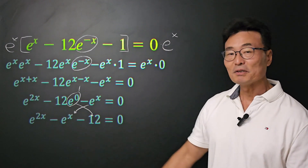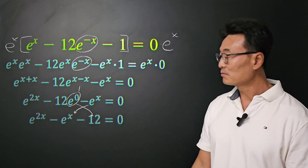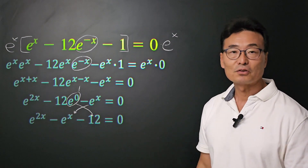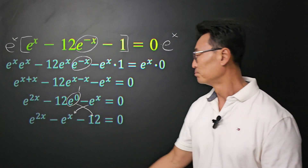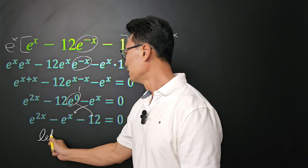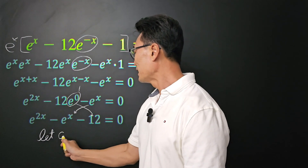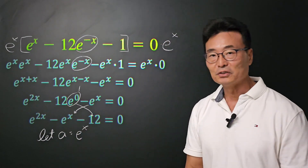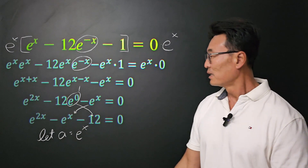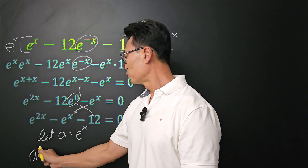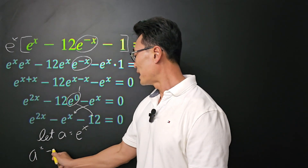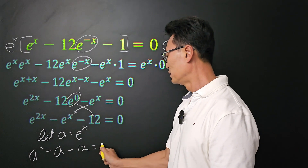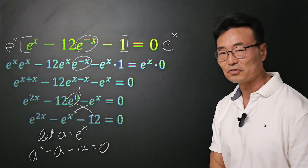Next, we are going to be factoring this. And to factor this, I'm going to be using a little substitution. So let's let a equal e to the x. Then we now have a squared minus a minus 12 equals 0.